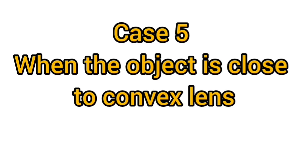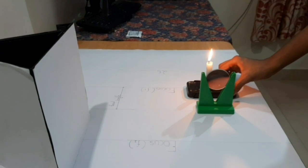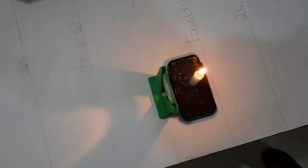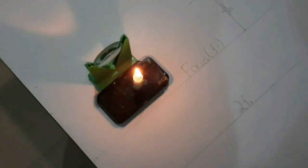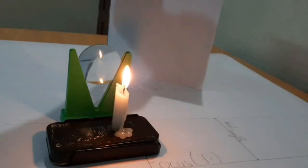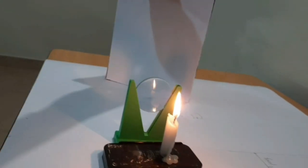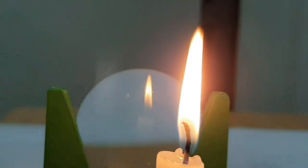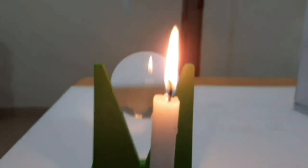In case five, we will see the formation of image by the convex lens when the object is at a distance less than the focal length. Place the lighted candle close to the convex lens, at a distance less than the focal length. Move the screen — no image is formed on the screen. Now look through the convex lens; we can see a larger and erect image of the candle flame. The image formed is virtual, erect, and magnified.